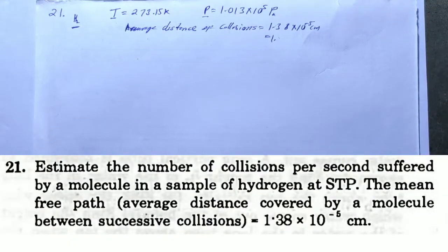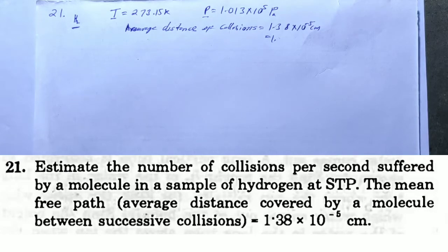H.C. Verma's Solutions, Chapter 24: Kinetic Theory of Gases, Question 21. Estimate the number of collisions per second suffered by a molecule in a sample of hydrogen at STP. The mean free path — the average distance covered by the molecule between successive collisions — is equal to 1.38 × 10⁻⁵ cm.